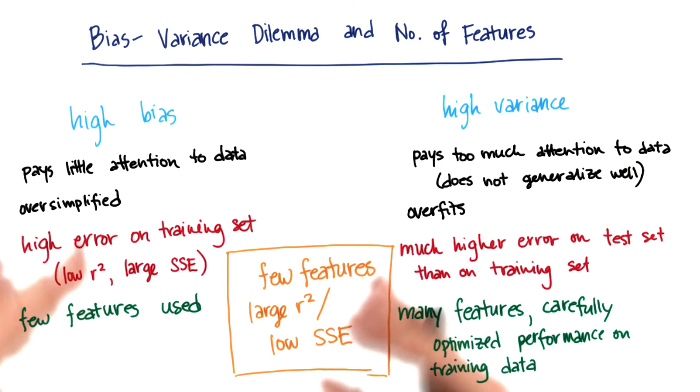What that means is you want to fit an algorithm with few features, but using the case of a regression, it has a large r-squared or conversely a low sum of the squared residual errors. This is the sweet spot that you want to find.